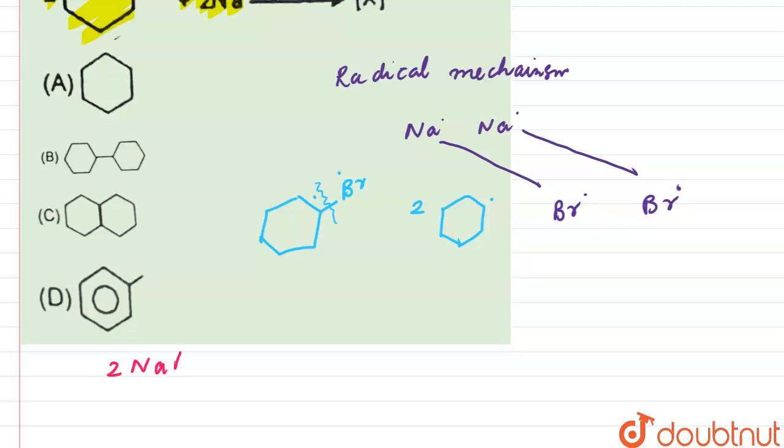Now what will happen with the cyclohexane radicals? Since we have two cyclohexane radicals, suppose it would be like this, a bond will be formed so that its charge basically gets balanced. So what will happen, there will be a bond formation over here.